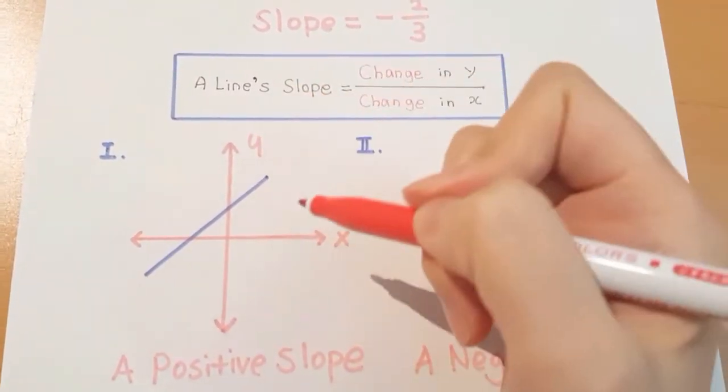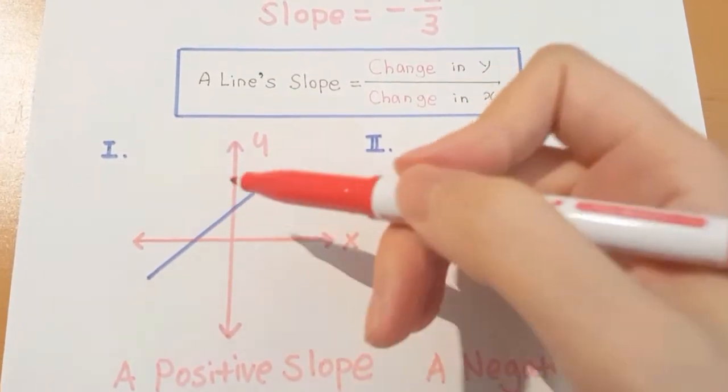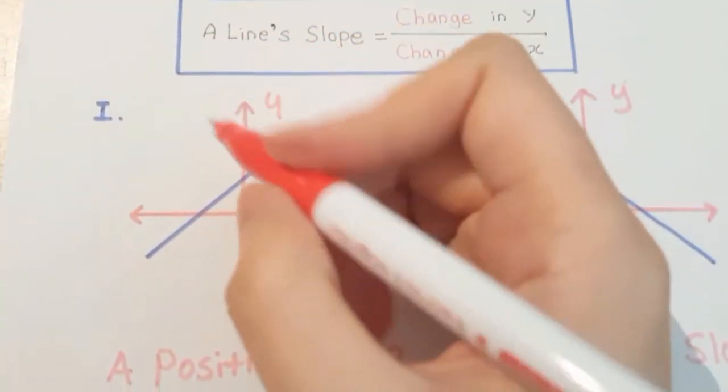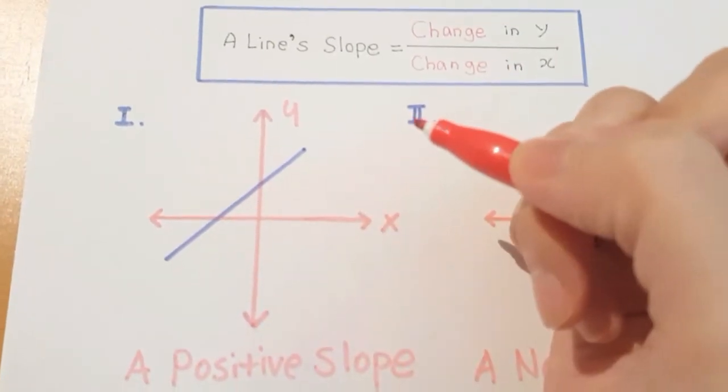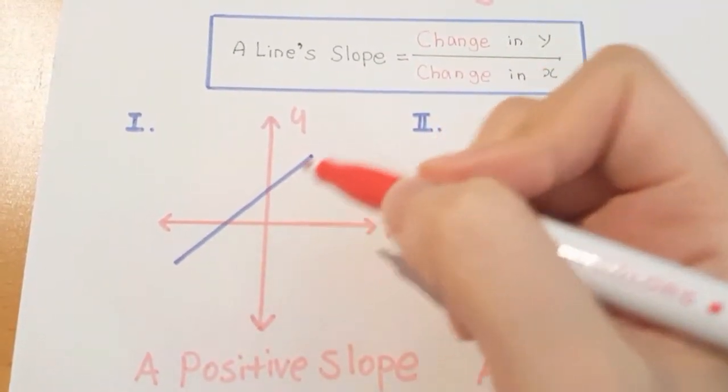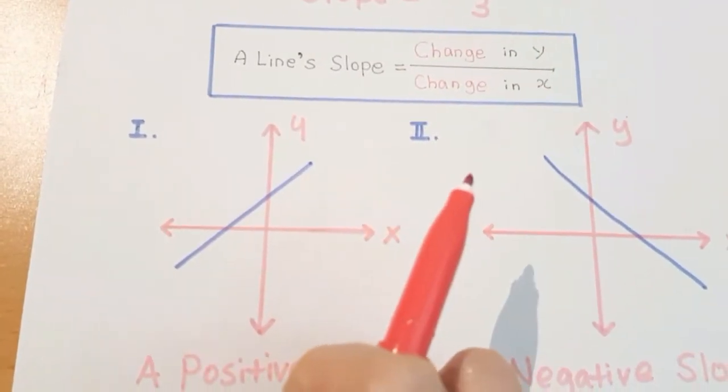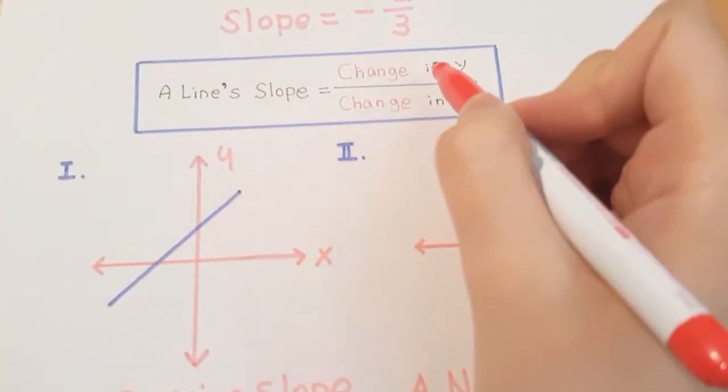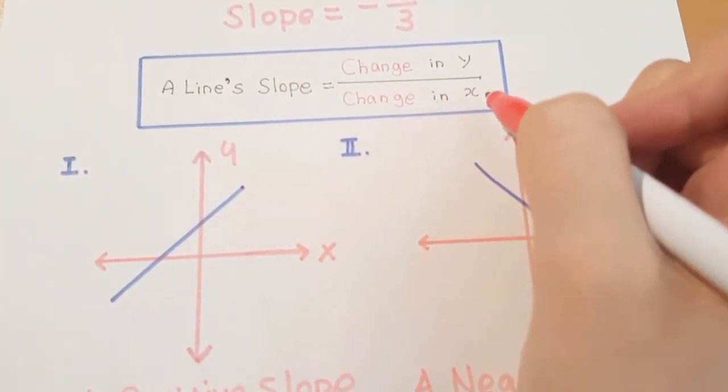When the slope is positive, we can figure it out by looking at the change in Y over change in X.